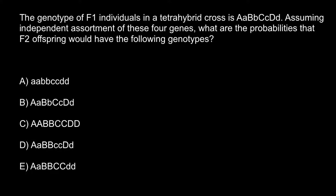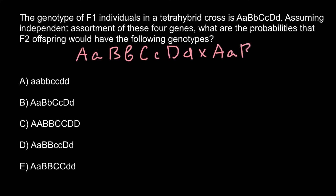Hello and welcome to Nikolai's genetics lessons. Today's problem is: the genotype of F1 individuals in a tetrahybrid cross is heterozygous for all four genes. Assuming independent assortment of these four genes, what are the probabilities that F2 offspring would have the following genotypes?